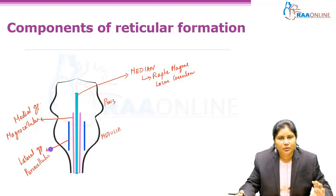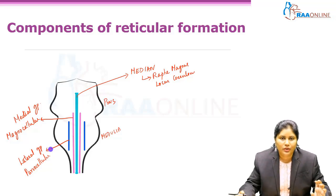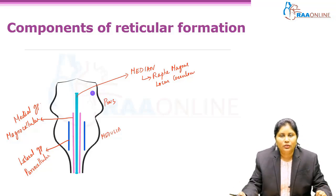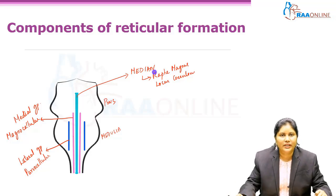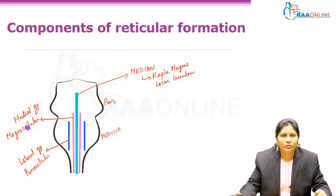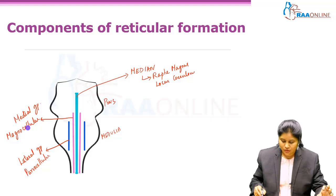The central nucleus of the medulla and the pons belong to the parvocellular group. So these are the three different nuclear aggregates forming the reticular formation: the median group, which includes the Raphe magnus nucleus and locus coeruleus; the medial group of magnocellular neurons of the medulla and pons; and the lateral group of parvocellular neurons of the central nucleus of the medulla and pons.